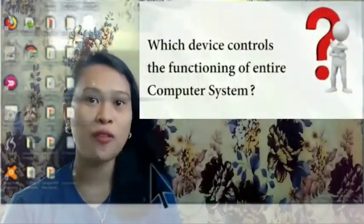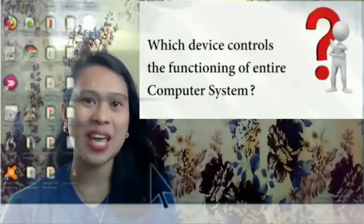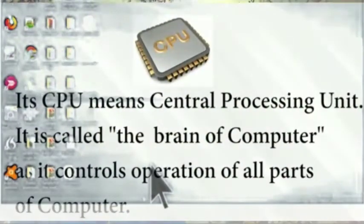Question time — which device controls the functioning of the entire computer system? The correct answer is the CPU. It is also called the brain of the computer, as it controls the operation of all parts. It is responsible for processing data given by the user, so it is called a processing device.